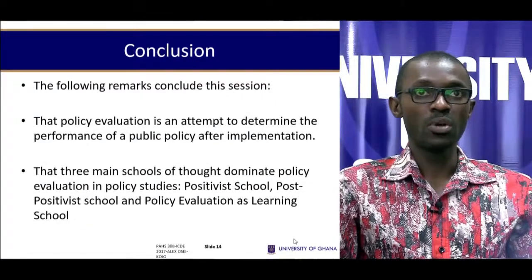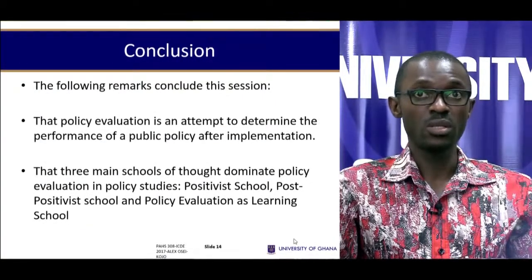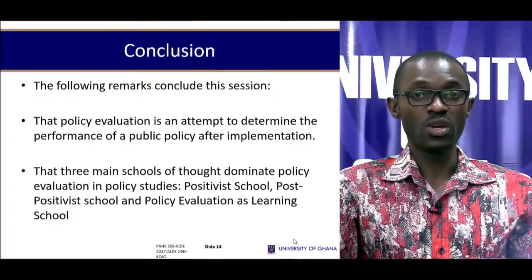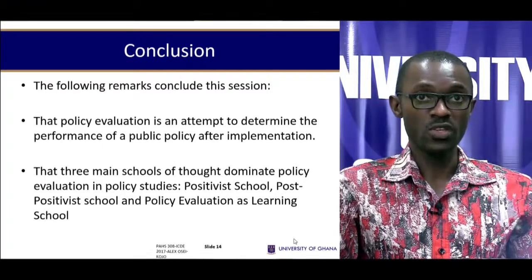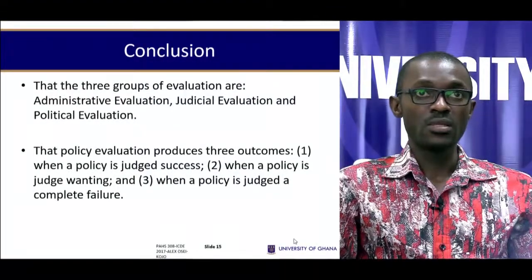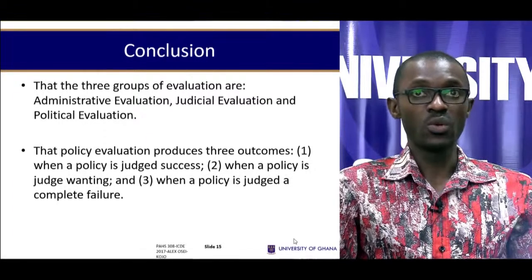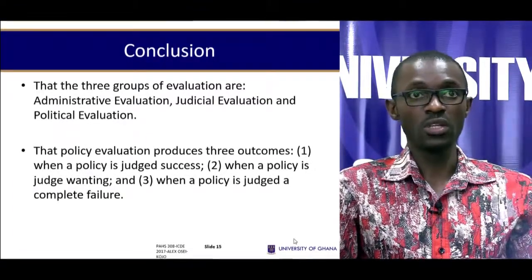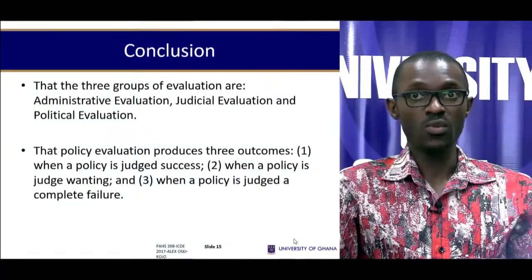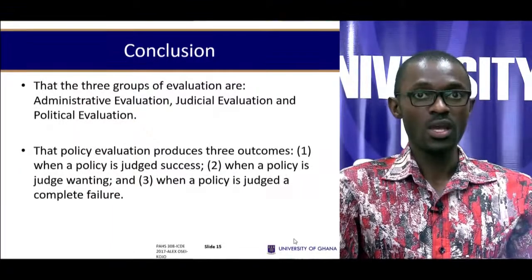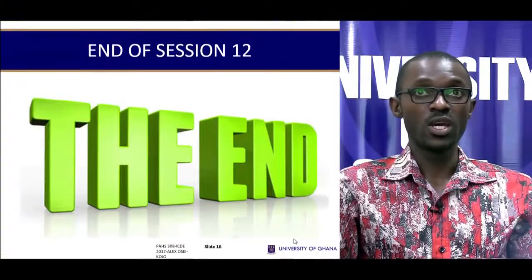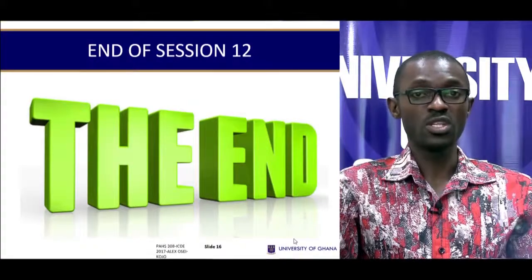To conclude, policy evaluation is an attempt to determine the performance of a policy after implementation. The three main schools of thought dominating policy evaluation are the positivist school, the post-positivist school, and the policy evaluation as learning school. The three groups of evaluation are administrative, judicial, and political evaluation. Policy evaluation produces three outcomes: a policy is judged a success, a policy is judged wanting, or a policy is judged a complete failure — in which case the policy would have to be terminated. This brings us to the end of session 12; please get ready as we continue with session 13.